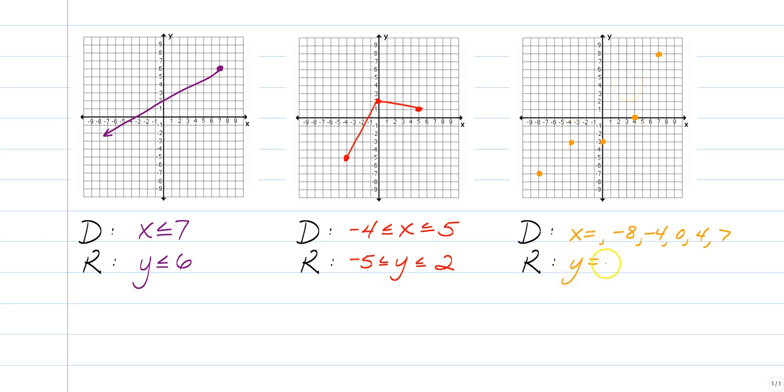So your range is also going to be just your specific dots, but this time we're just going to list the y values. So we have a negative seven for a y value. We also have a negative three. This is also negative three, so we don't have to list those twice. We have a y value of zero,